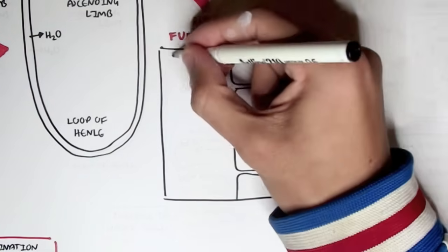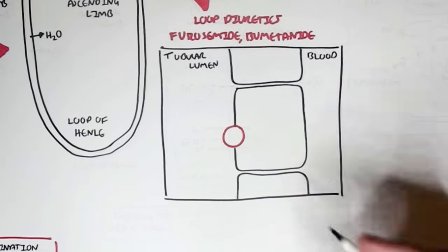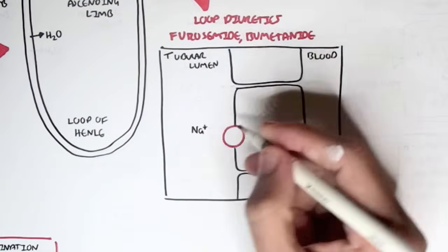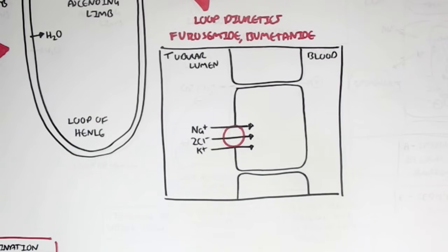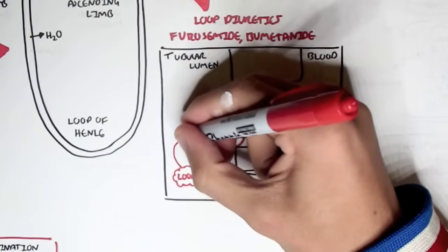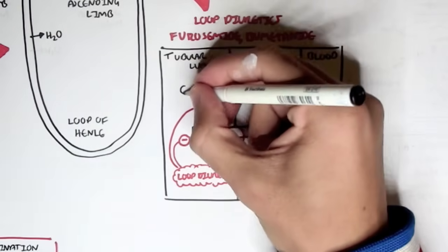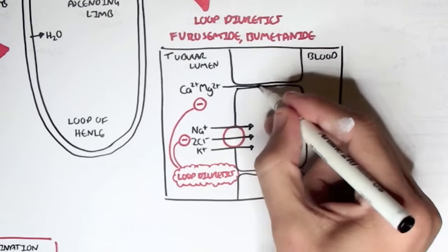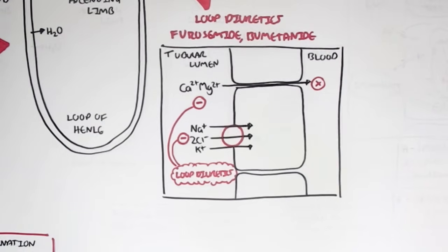Here we have the blood and the tubule lumen inside the nephron. The cotransporter typically transports sodium, two chloride ions, and one potassium through. Loop diuretics prevent chloride from being reabsorbed — essentially blocking the transporter so the other ions are not reabsorbed either. In the long term, loop diuretics also prevent the reabsorption of calcium and magnesium ions. Overall, loop diuretics prevent the reabsorption of sodium, which prevents the reabsorption of water, and therefore decreases blood pressure.